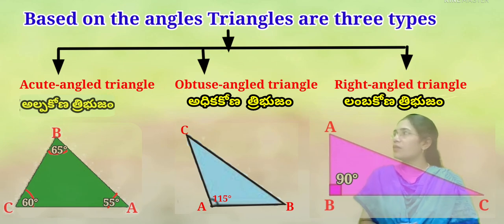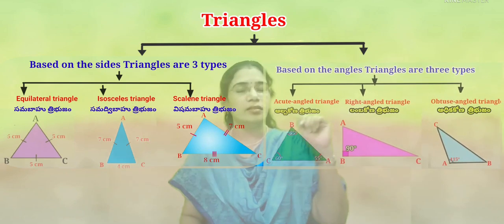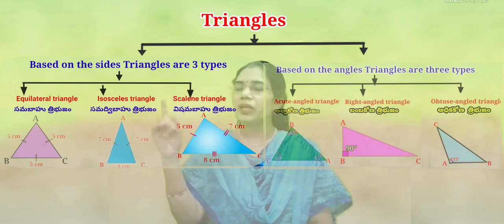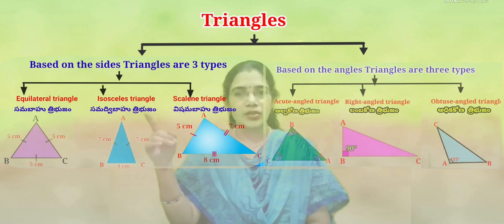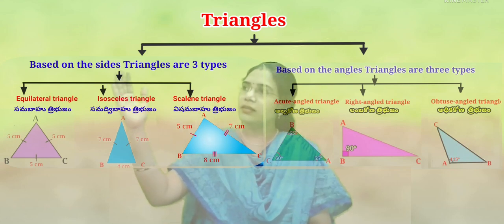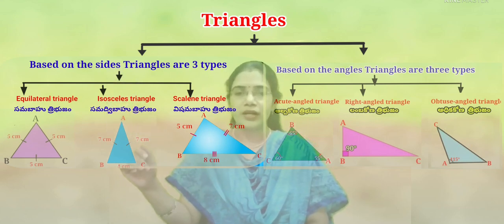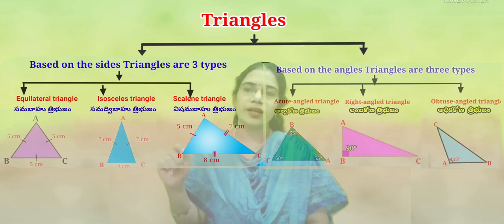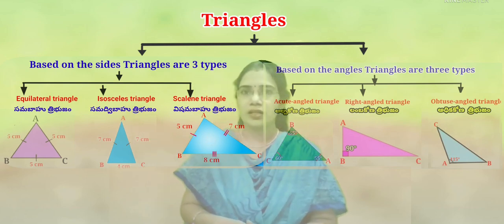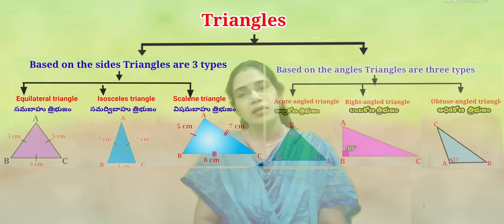Let us review once again. Based on sides, there are three types of triangles: equilateral triangle (three sides equal), isosceles triangle (two sides equal), and scalene triangle (three sides different). Based on angles, there are three types: acute angle triangle, right angle triangle, and obtuse angle triangle.